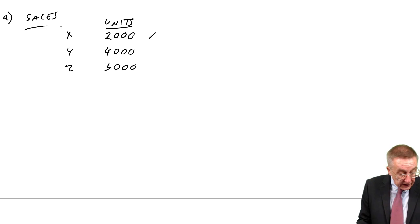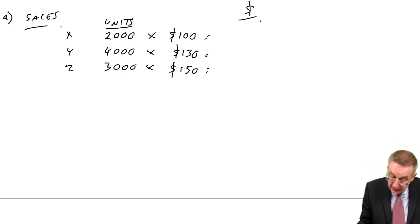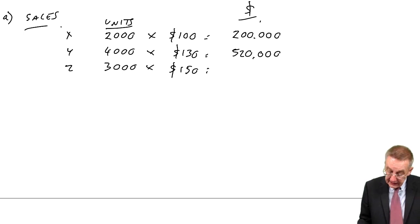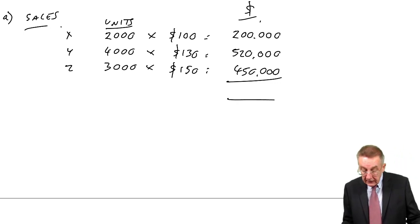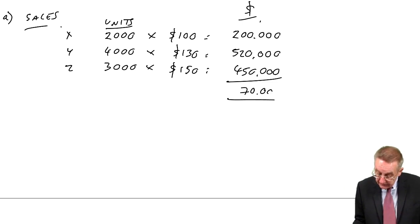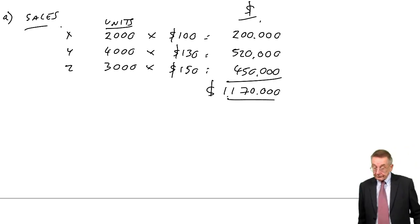It also wants value. The selling price is $100, $130, $150. So the total revenue, we're budgeting on $200,000 from X, $520,000 from Y, and $450,000 from Z. So the total revenue we're budgeting on is $1,170,000. That was nice and easy.